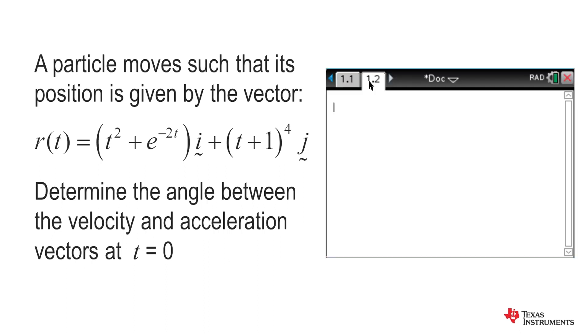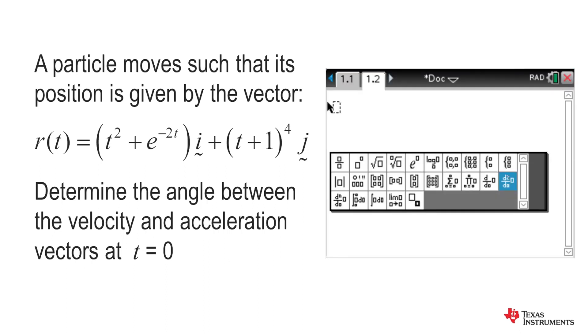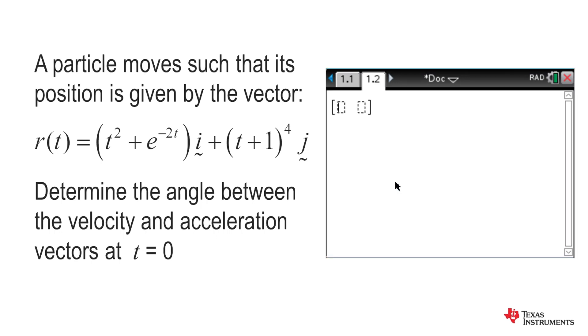Using the calculator screen, we can grab the matrix or vector from here and we can enter the x in t component, t squared plus e to the power negative 2t. And then we enter the y in t component, which was t plus 1 all to the power 4.